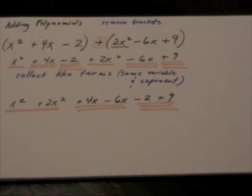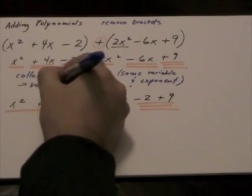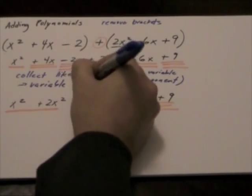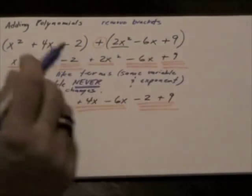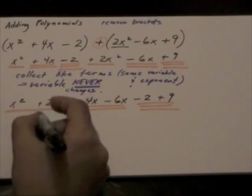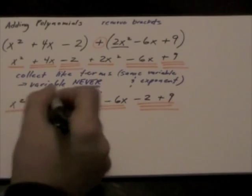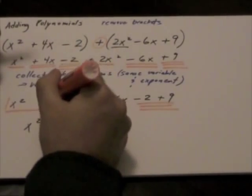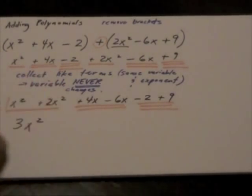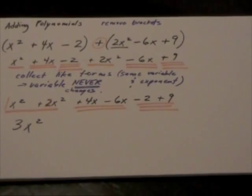So now I can actually combine my like terms. And the key is when you are collecting like terms, the variable never changes. In other words, the variable in this expression is x squared. Really what I'm doing is I'm just adding my numerical coefficients. So we're just adding our numerical coefficients and we're keeping the variable as is.